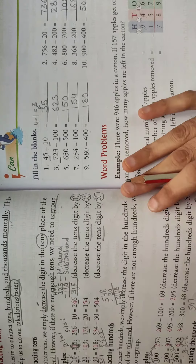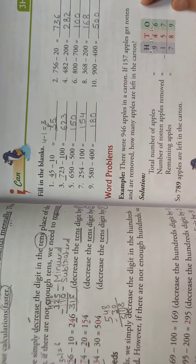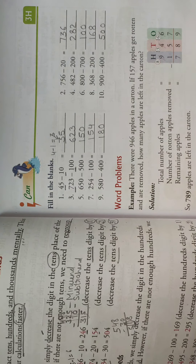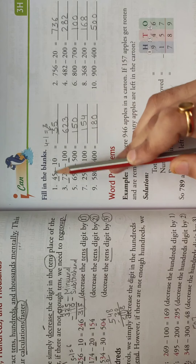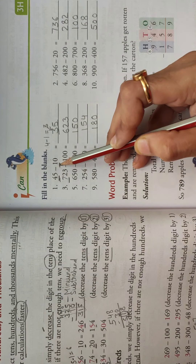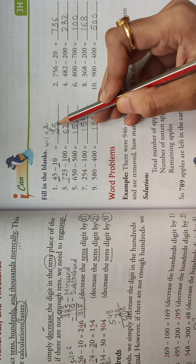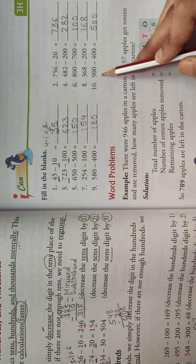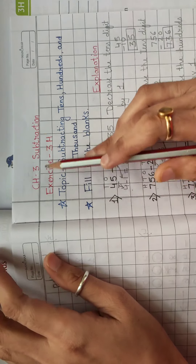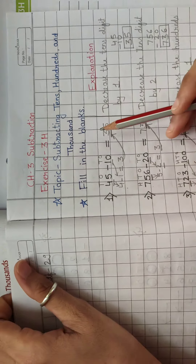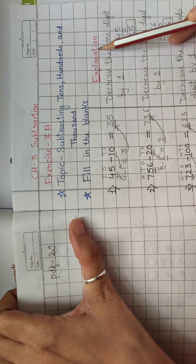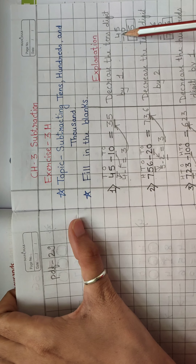I hope you understand the topic: subtracting tens, hundreds and thousands. Now we will do Exercise 3H, which is on page number 73 of your book. There are fill-in-the-blank questions. For example, 45 minus 10 — we change only the tens place: 4 minus 1 equals 3, so we write 35. There are 10 questions; write in your fair copy with today's date, chapter number three, subtraction, exercise 3H.